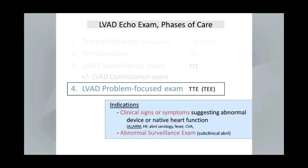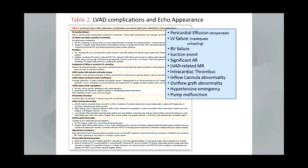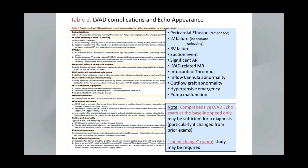The next protocol is the LVAD problem-focused exam. This is indicated when there's any suggestion of abnormal device or native heart function, including alarms, recurrent heart failure, abnormal serology, fever, or stroke. This could also include an abnormal surveillance exam when there were subclinical findings to try to validate those findings. Some LVAD complications and their echocardiographic appearance include: pericardial effusion, LV failure, RV failure, suction events, significant AR, VAD-related MR, intracardiac thrombus, inflow cannula and outflow graft abnormalities, hypertensive emergency, and pump malfunction. A comprehensive LVAD exam just at the baseline speed may be sufficient for a diagnosis, particularly if there are changes from the prior exam, but a speed change or ramp study may be required.